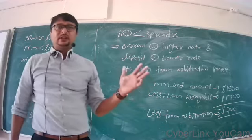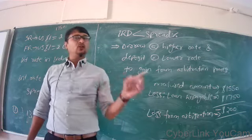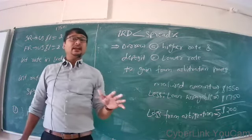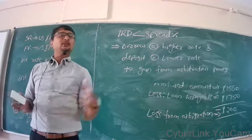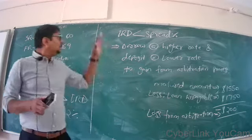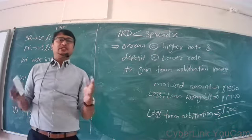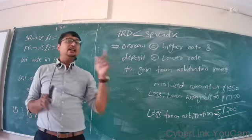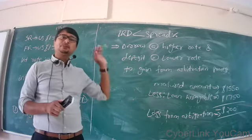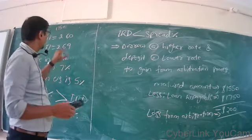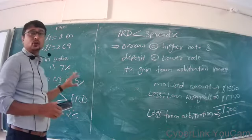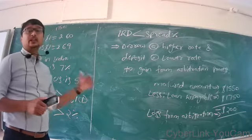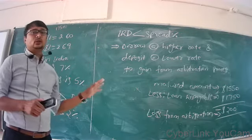We have proved all 3 scenarios. Interest Rate Parity Theory talks about the parity between Spread Percentage and Interest Rate Differential. When there is parity — no arbitration, no gain no loss. When Interest Rate Differential is greater than Spread Percentage — borrow at lower rate, deposit at higher rate to gain. When Spread Percentage is greater than Interest Rate Differential — borrow at the higher rate country and deposit in the lower rate country, as we did: borrowed from India at 7%, deposited in US at 5%, earning Rs. 13,750 on Rs. 1,00,000.